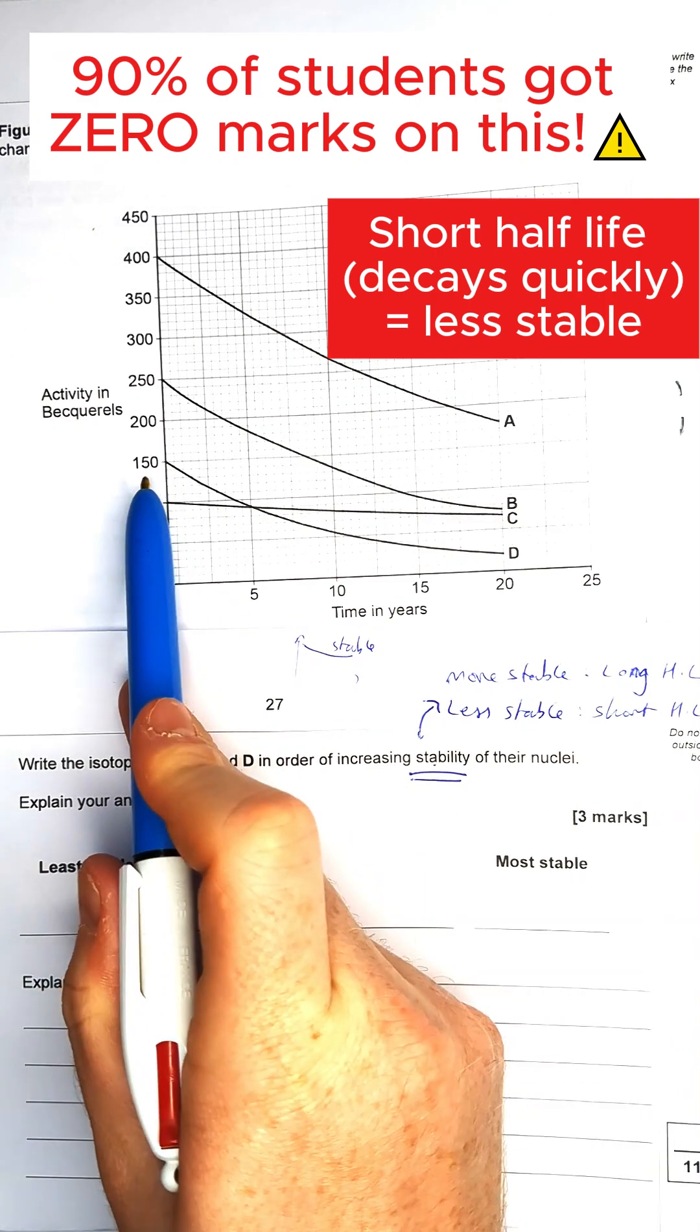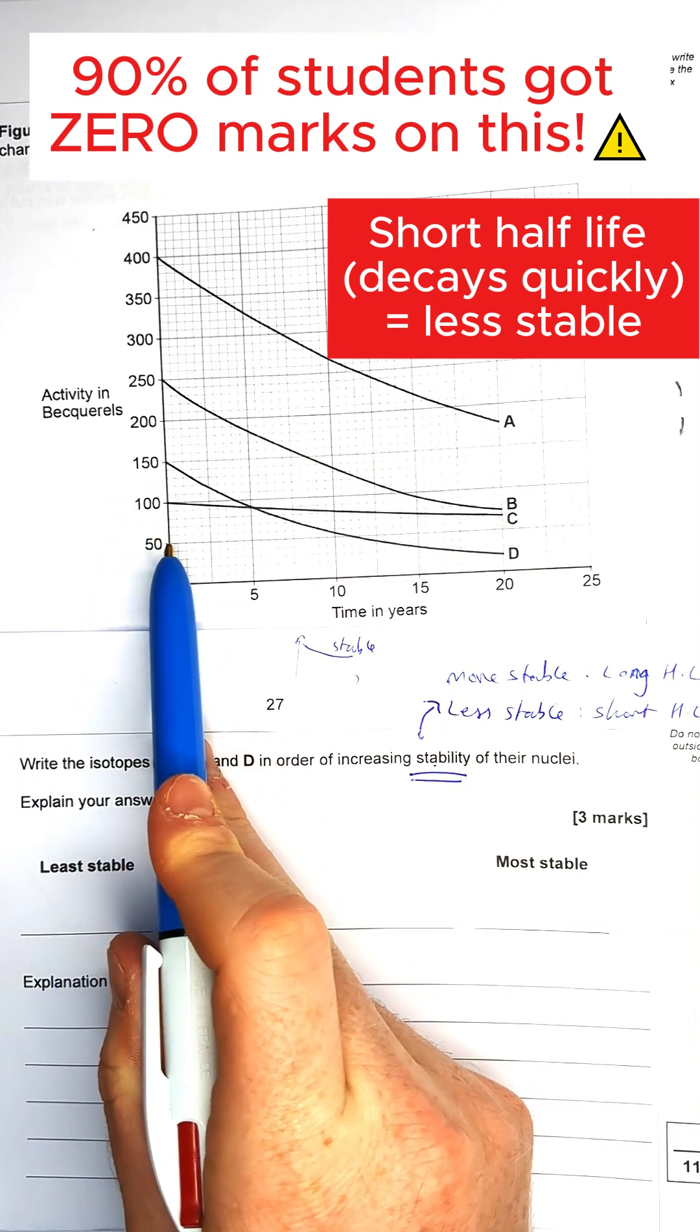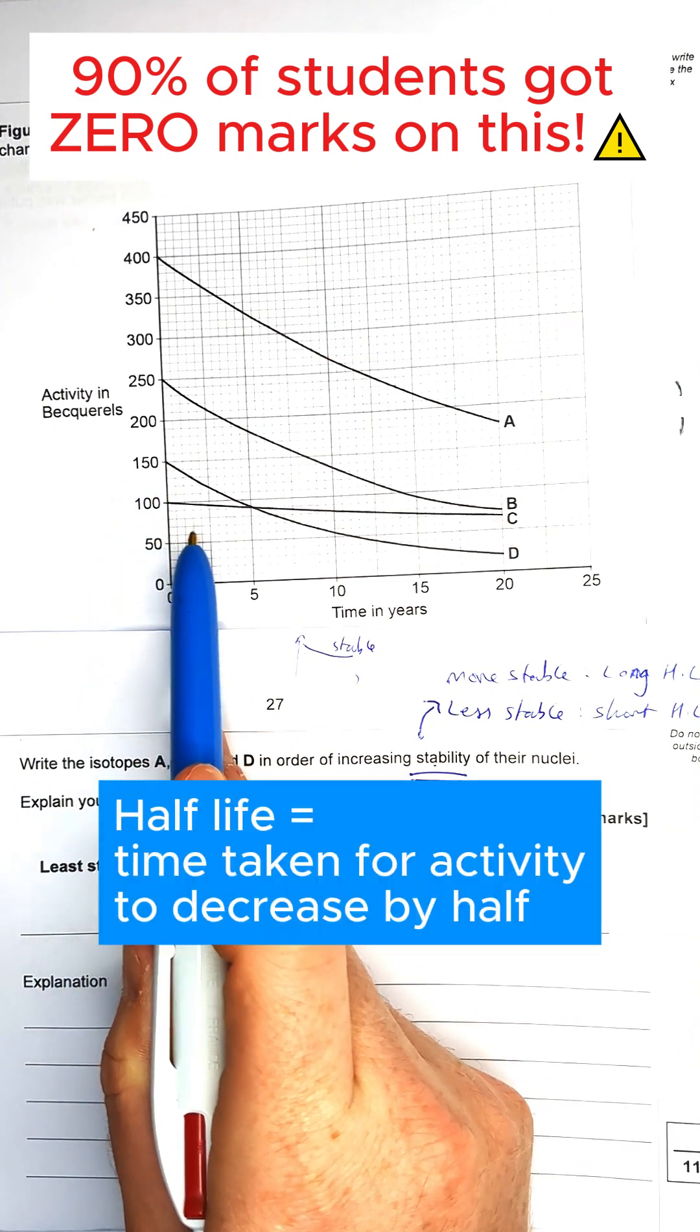So what you've got to do is do a quick look with your ruler, see which has the longest half-life and the shortest half-life out of these four lines.